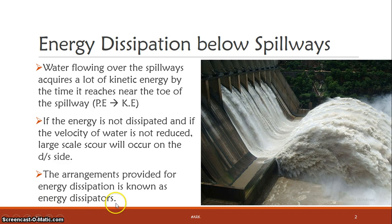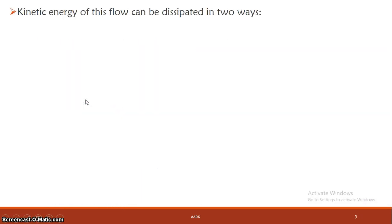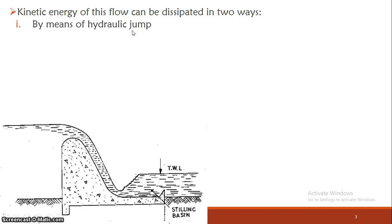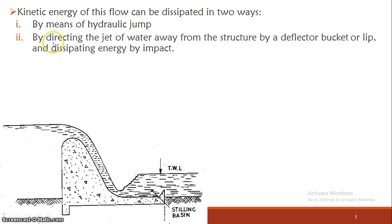We need to provide energy dissipators. There are two methods to dissipate kinetic energy. The first one is by means of a hydraulic jump. When there is quick flow from the spillway downstream, this flow will be supercritical flow. Supercritical flow transitions to subcritical flow through a hydraulic jump, which brings energy dissipation, and we provide a stilling basin. The second method is by directing the jet of water away from the structure by a deflected bucket or ski leap, dissipating the energy by impact.